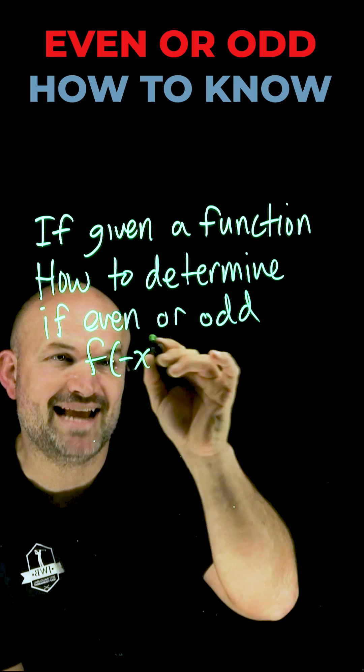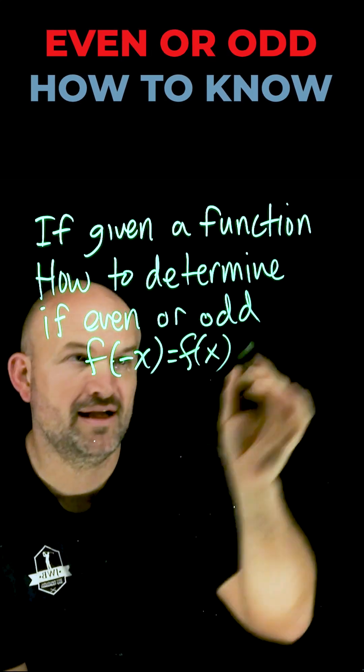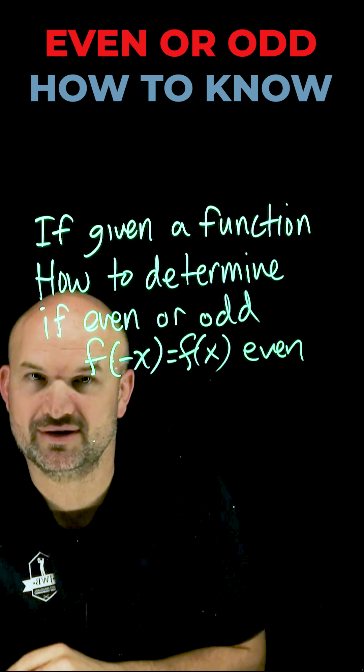If you take a function and you plug in negative x as the input variable and you get back the exact same function, then that function is going to be considered even.